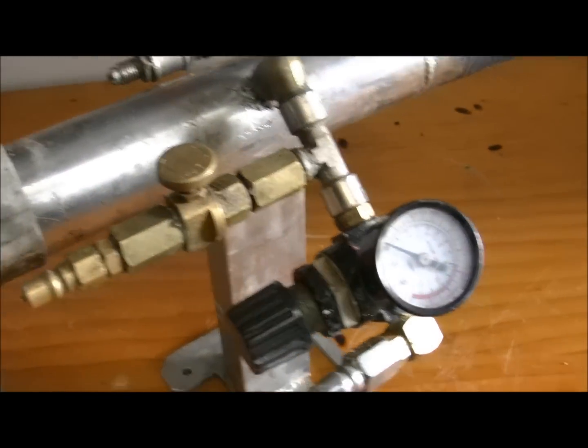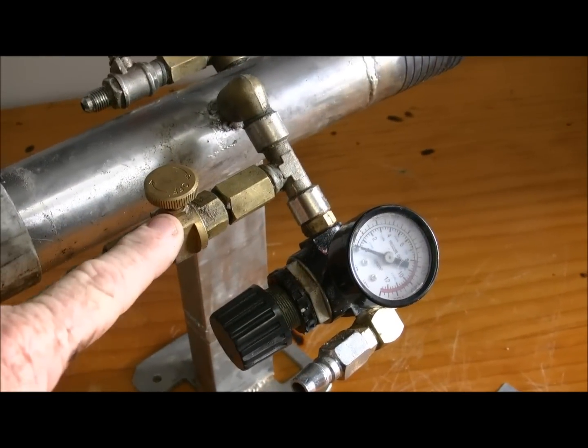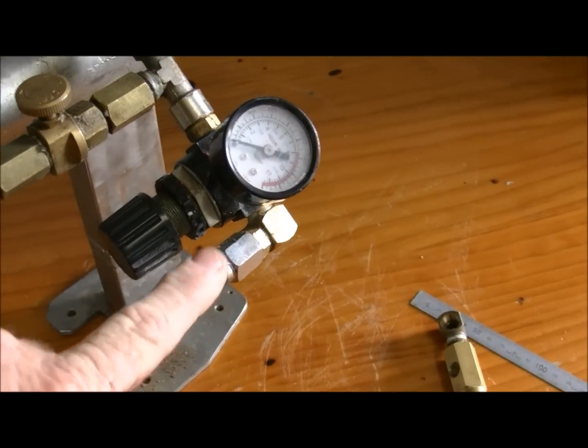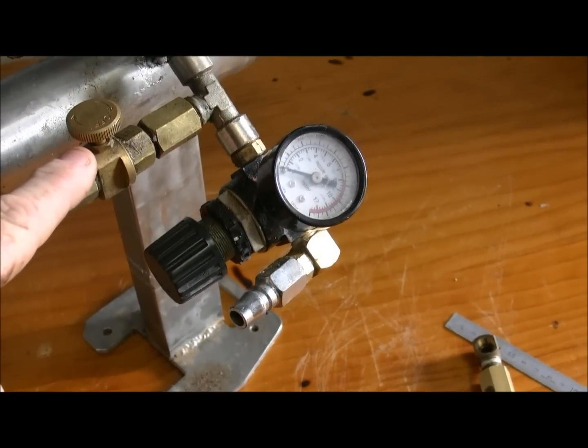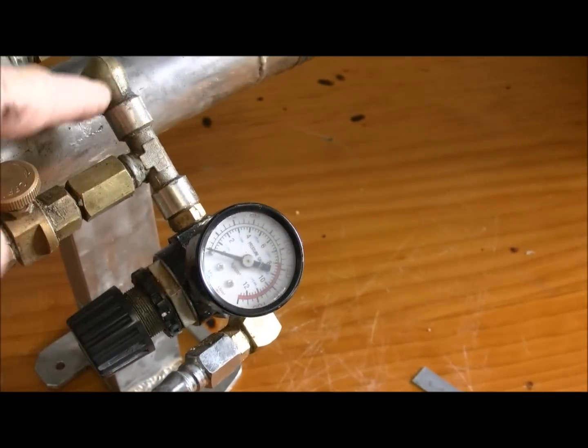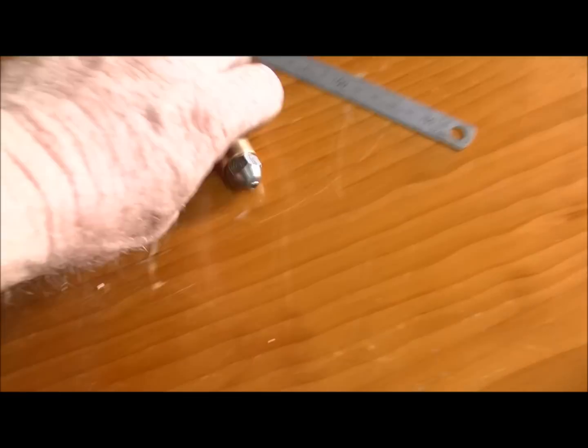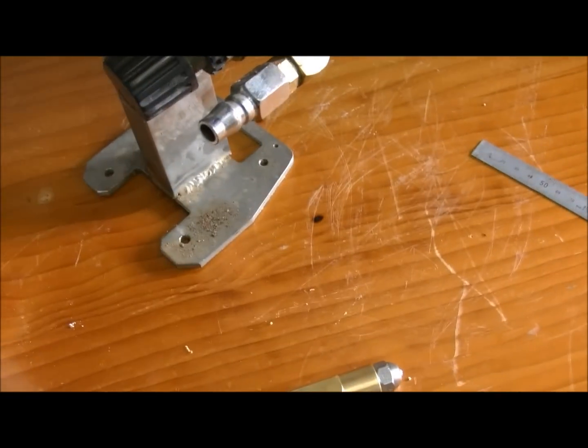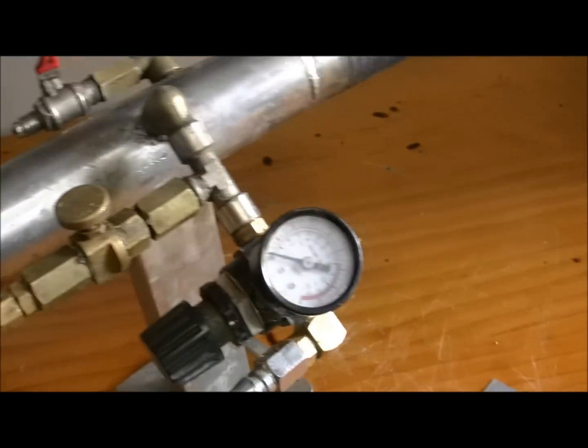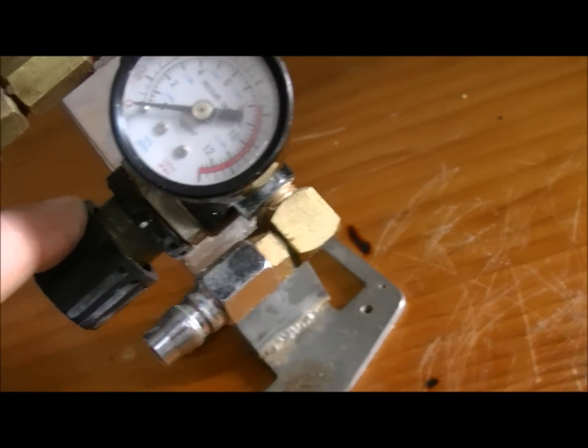One thing I did work out is that if you move the gas from here to here and the air from here to there, it doesn't seem to work. It seems to require the air to travel past the connection for the gas to go into the jet properly, which is that one there. It'll burn properly. If you have them back to front, it won't burn properly.